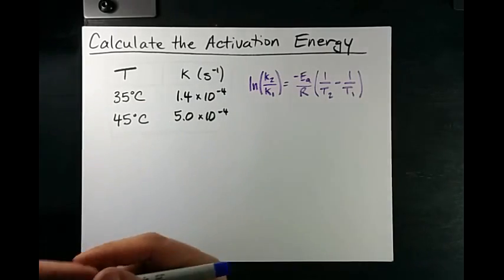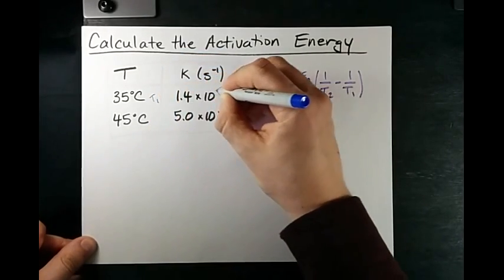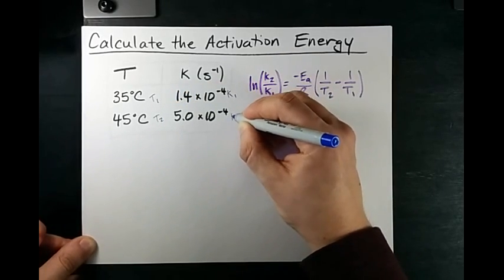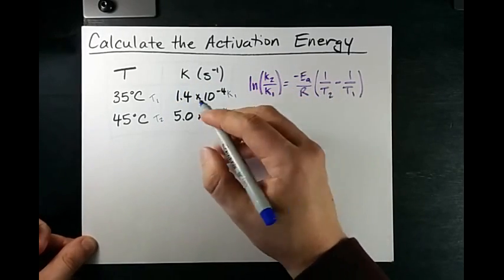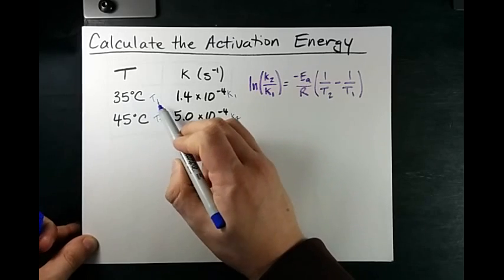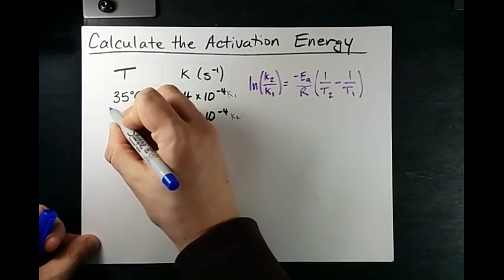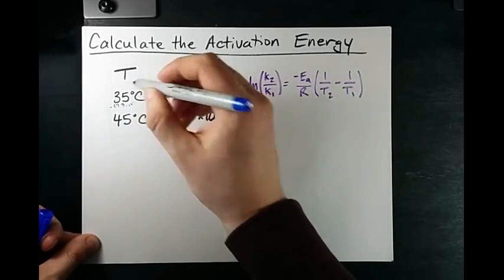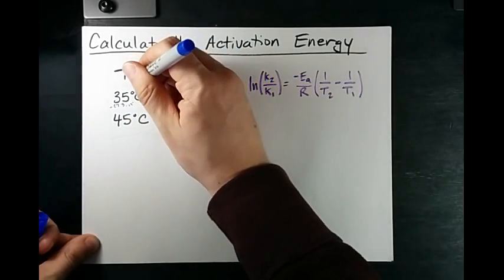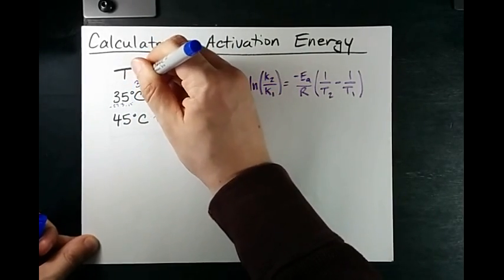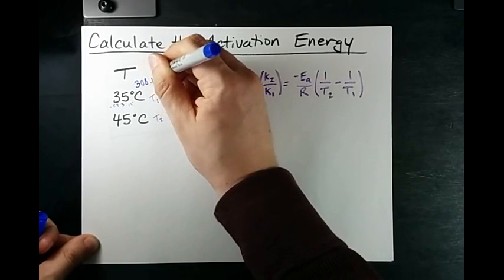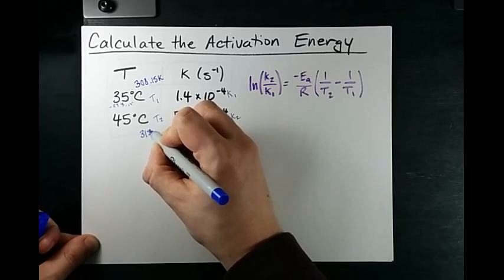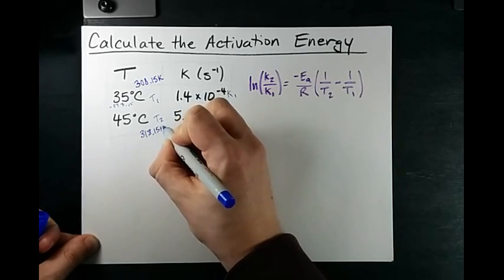I'm going to label my first data points here as T1, K1 and T2, K2, although I will have to convert my temperatures into Kelvin. I do that by adding 273.15 to them, so 35 degrees Celsius becomes 308.15 Kelvin and 45 degrees Celsius becomes 318.15 Kelvin.